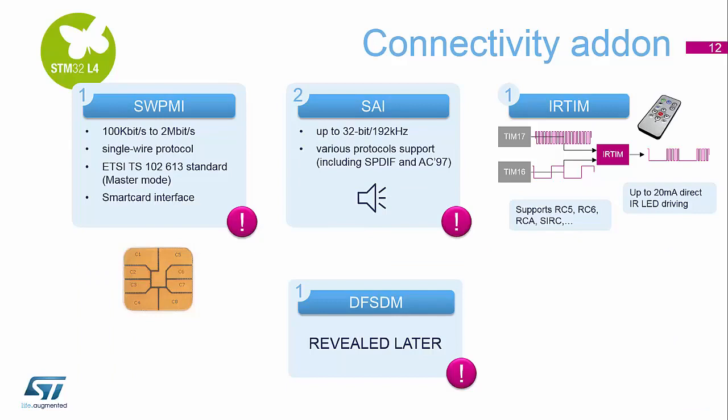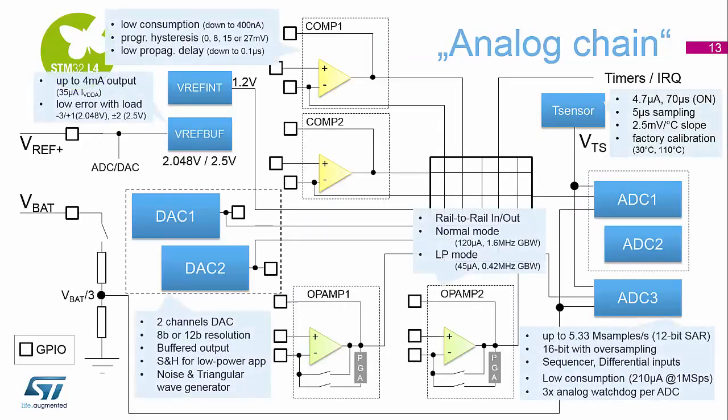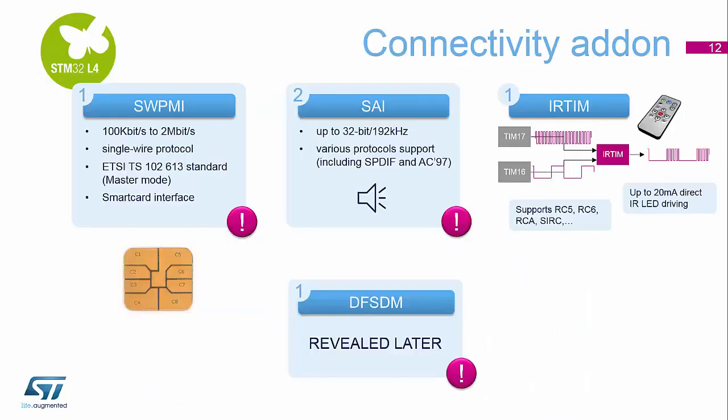Some of the newer features added to the STM32 L4: we have SWPMI — serial wire protocol master interface — primarily used for smart card. We also have audio: two SAI (serial audio interfaces) that can manage up to CD quality data rates, with protocol support for AC97 and SPDIF built into the peripheral.